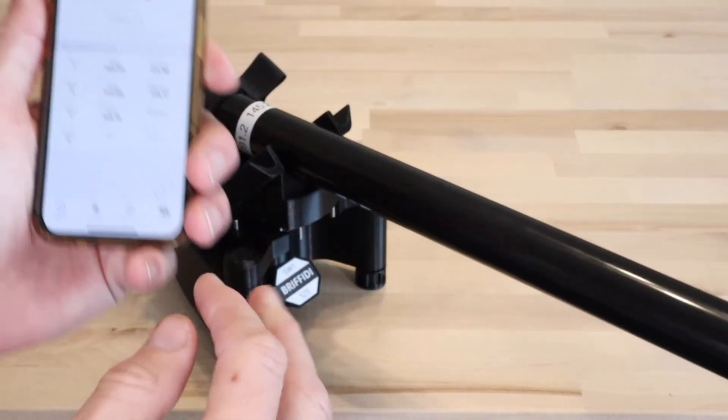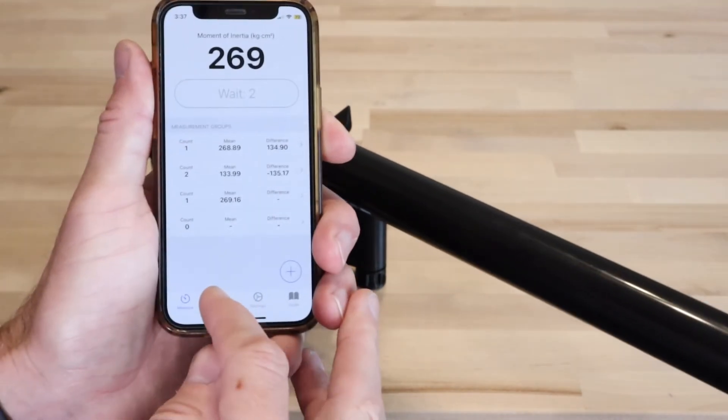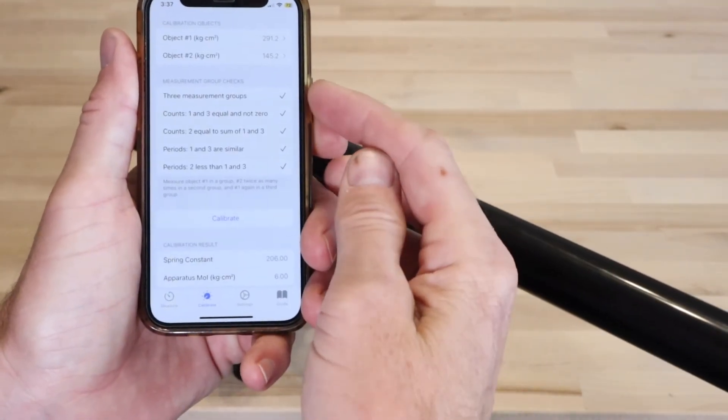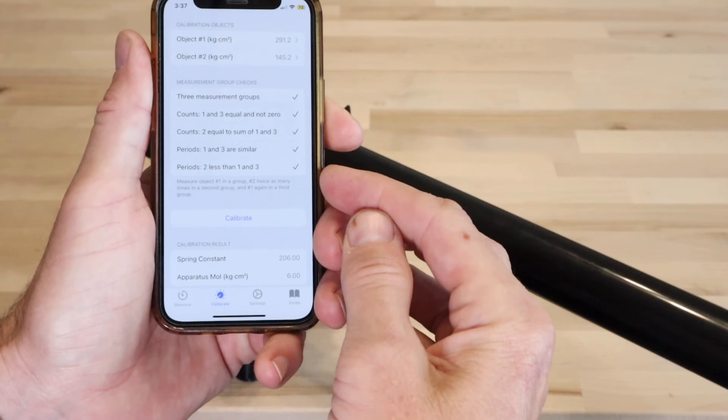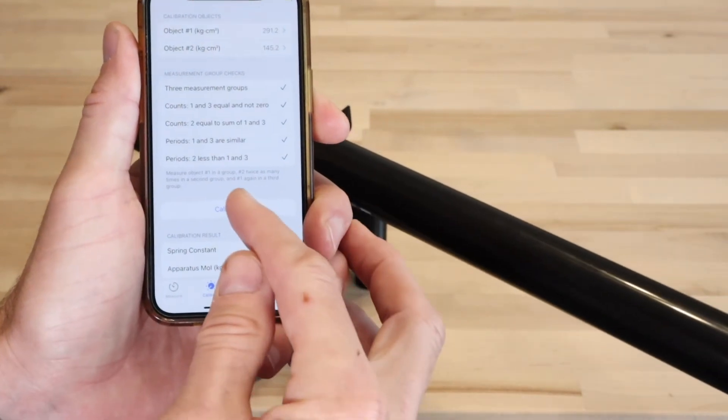To finish calibration, navigate to the calibrate tab. Ensure that the measurement groups are all satisfied. If not, figure out what is wrong and repeat the measurements. If satisfied, tap the calibrate button.